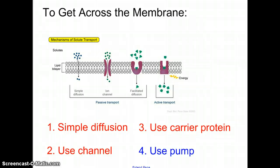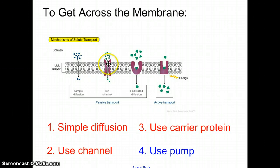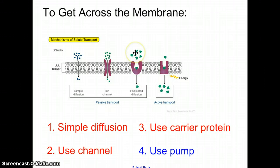There are four different ways for something to get across the cell membrane. It can either simply diffuse, which means that it's soluble in fat, or it uses a channel, or it uses facilitated diffusion, or it uses active transport.